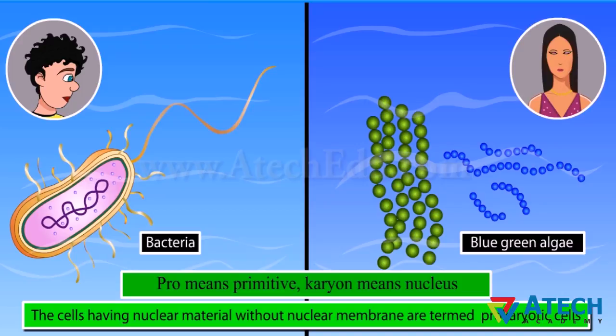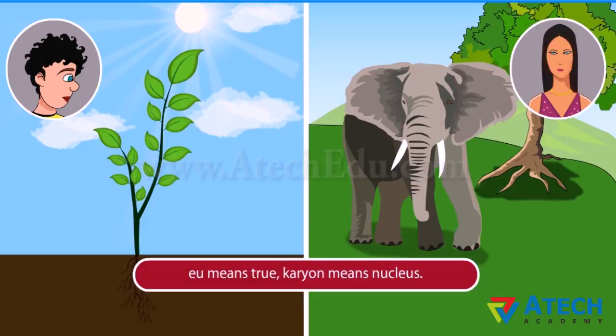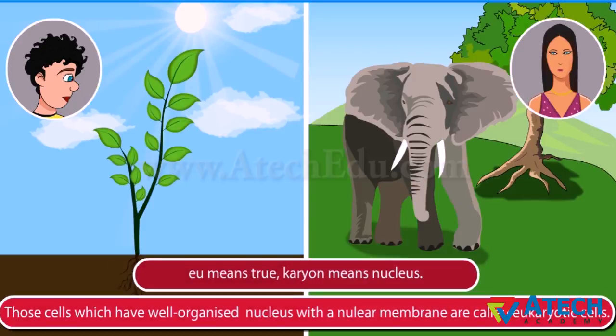Those cells which have a well organized nucleus with a nuclear membrane are called eukaryotic cells. 'Eu' means true and 'karyon' means nucleus. All plants and animals other than bacteria and blue-green algae are examples of eukaryotes.